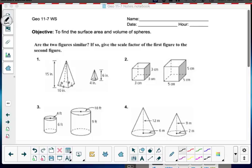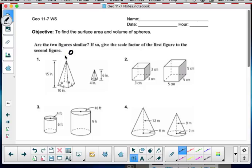Okay, this is 11-7 corrections. Are the two figures similar? If so, give the scale factor of the first figure to the second figure. To determine this, I've got to line up corresponding measurements. So in this first one, I've got 10 to 4.